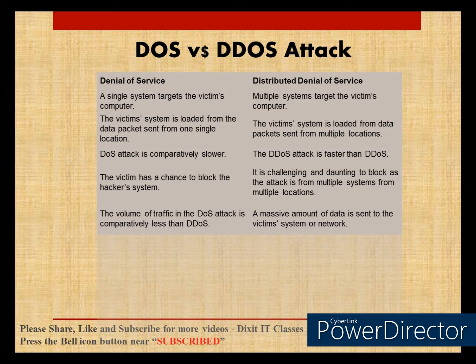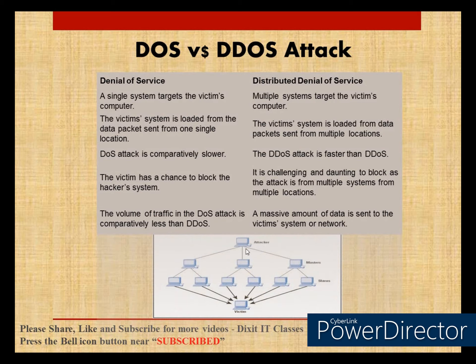In a DOS attack, the victim has a chance to block the hacker's system — if your firewall detects that the attack is coming from a particular system, you can block it. But if a DDoS attack occurs, handling multiple locations at a time becomes very difficult, and your system can become unstable. Also, the volume of traffic in a DOS attack is comparatively less than DDoS. Looking at a diagram: the attacker creates multiple masters, and within those multiple slaves, and through them launches a bombardment, making the victim server's services completely unstable compared to a DOS attack.